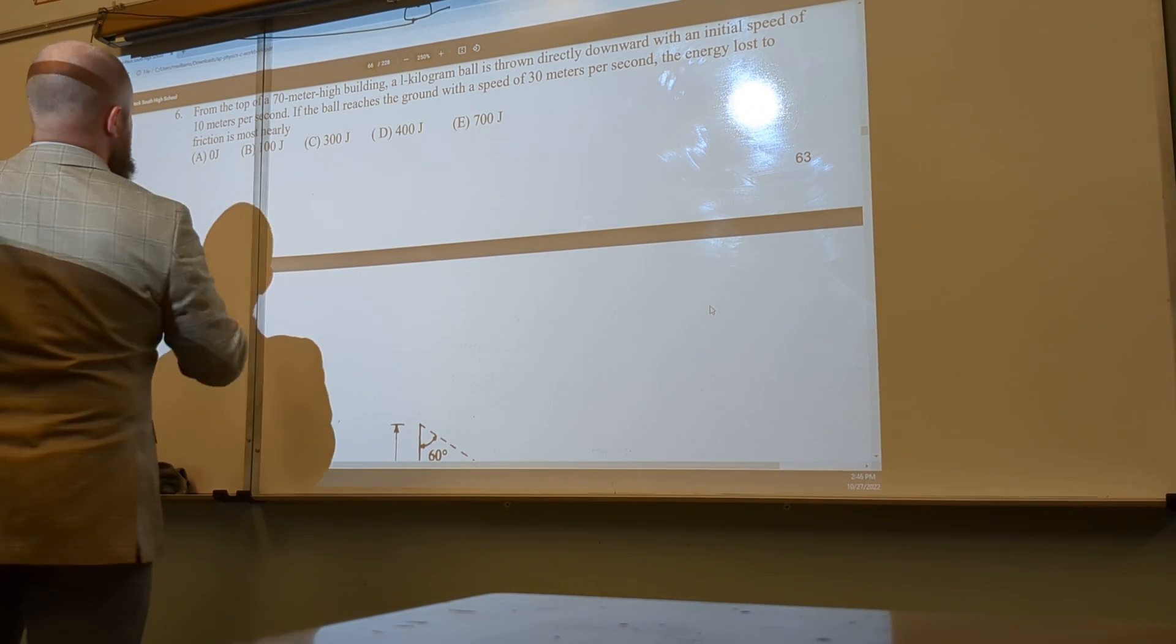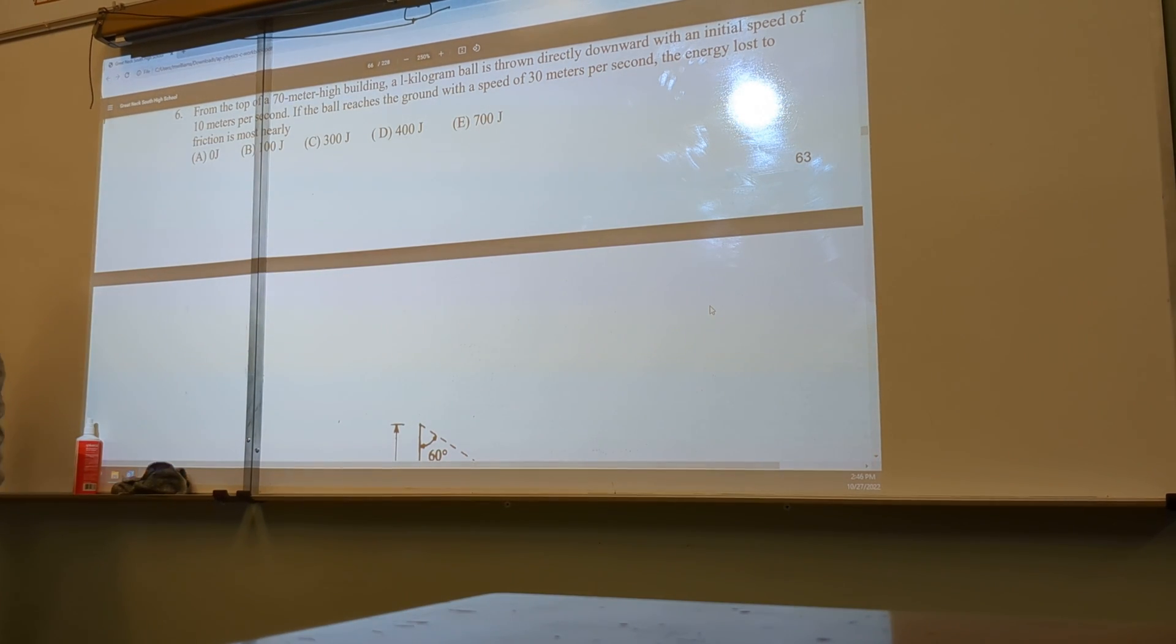Hello again. Let's look at number 6. From the top of a 70 meter high building, a 1 kg ball thrown directly down with an initial speed of 10 meters per second. If the ball reaches the ground with a speed of 30 meters per second, the energy loss to friction is most nearly what?